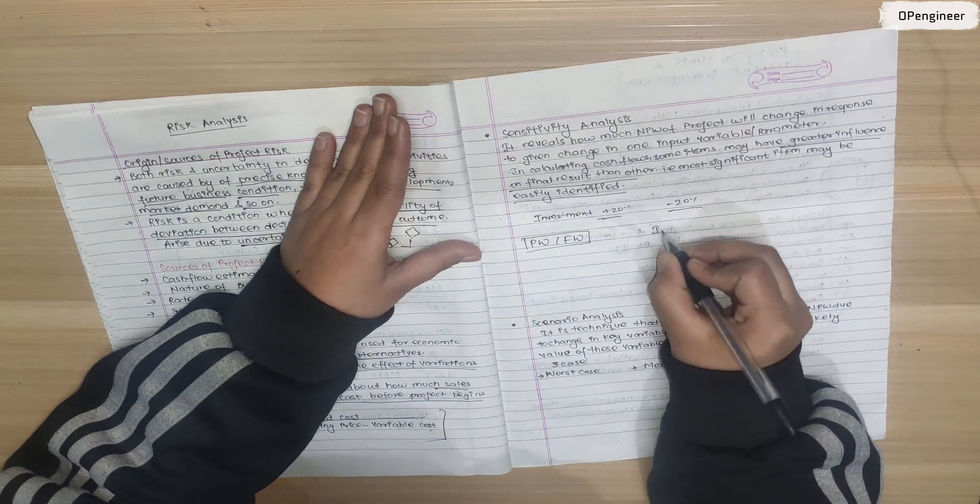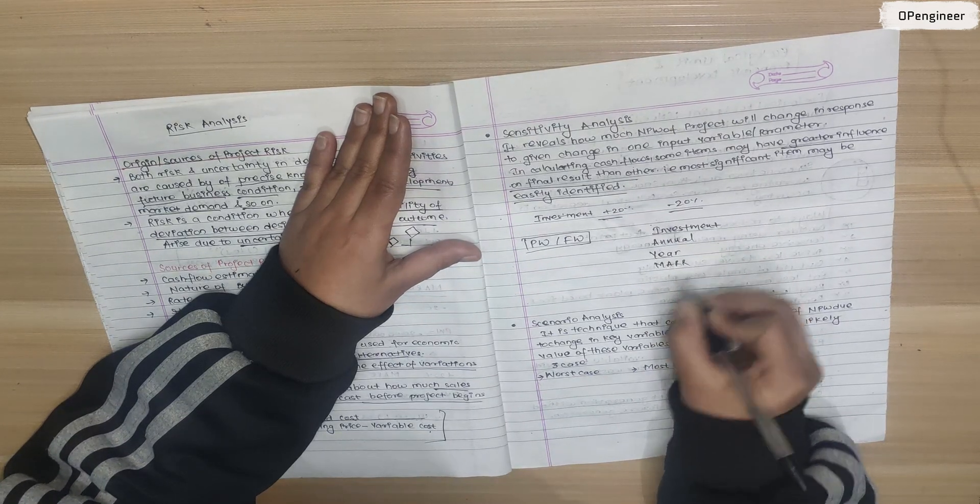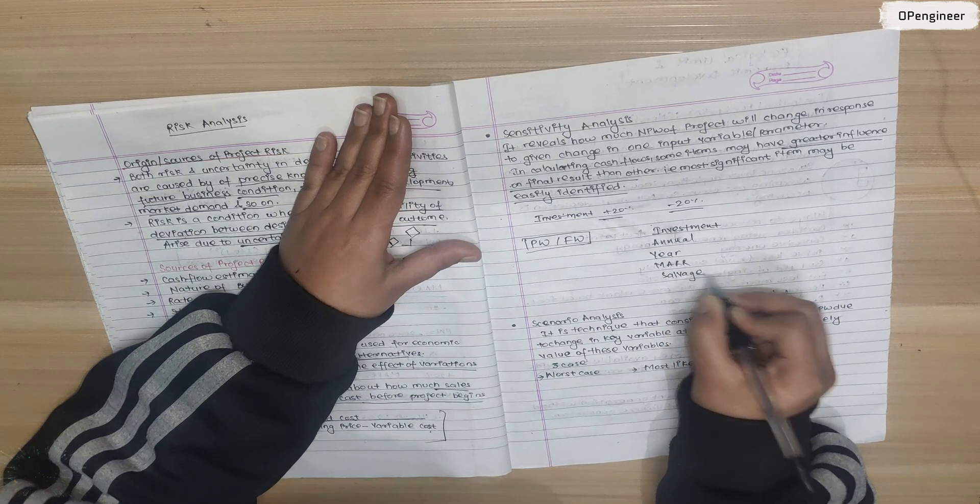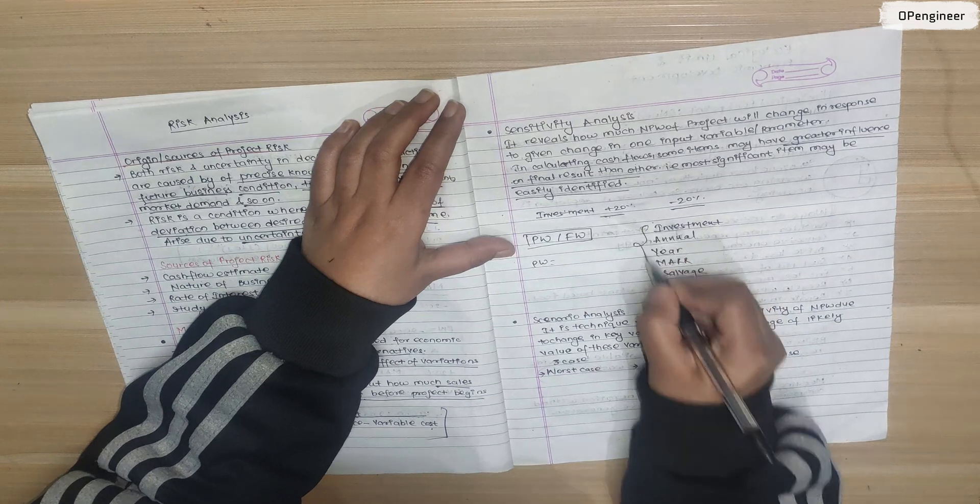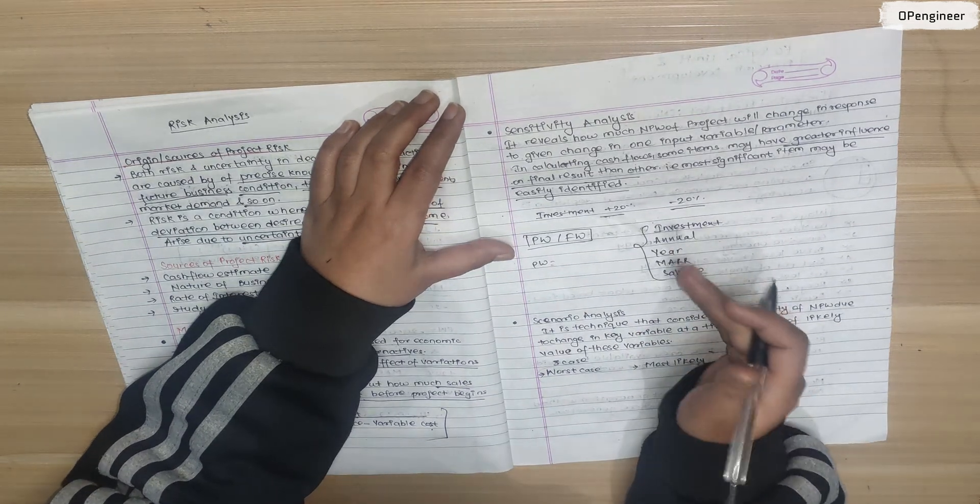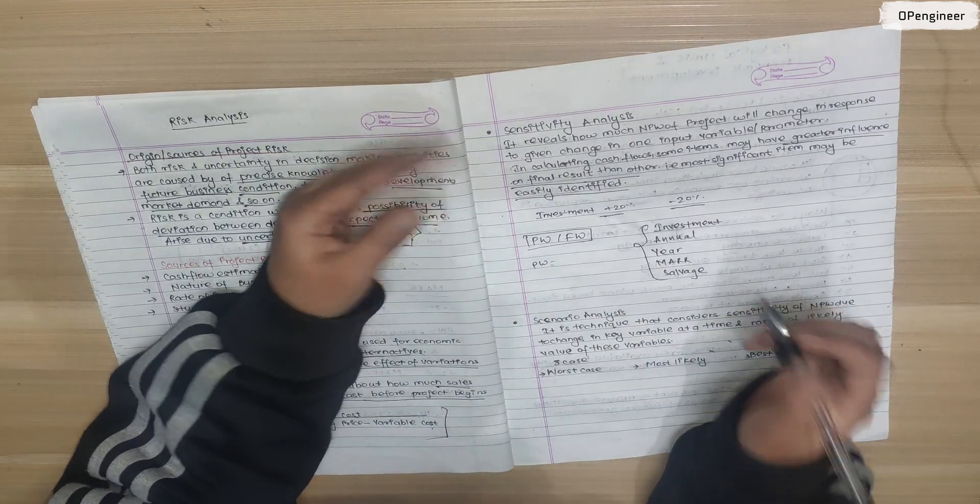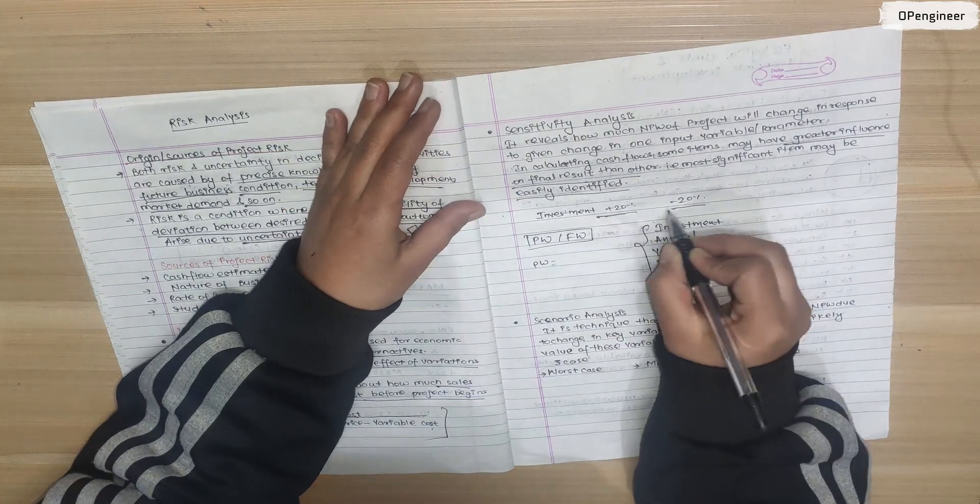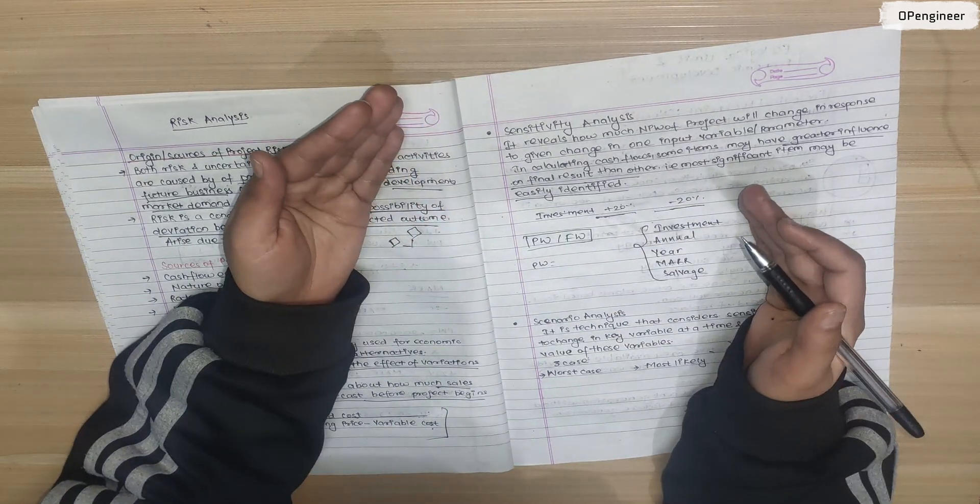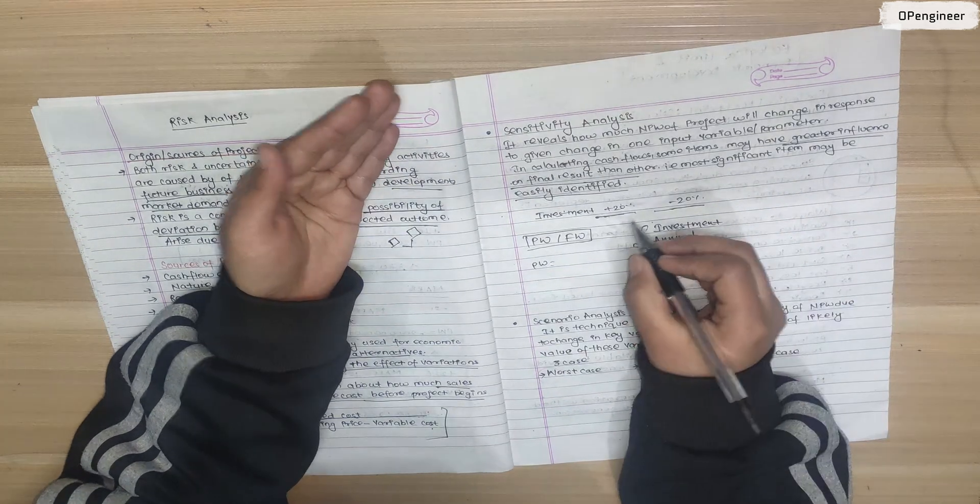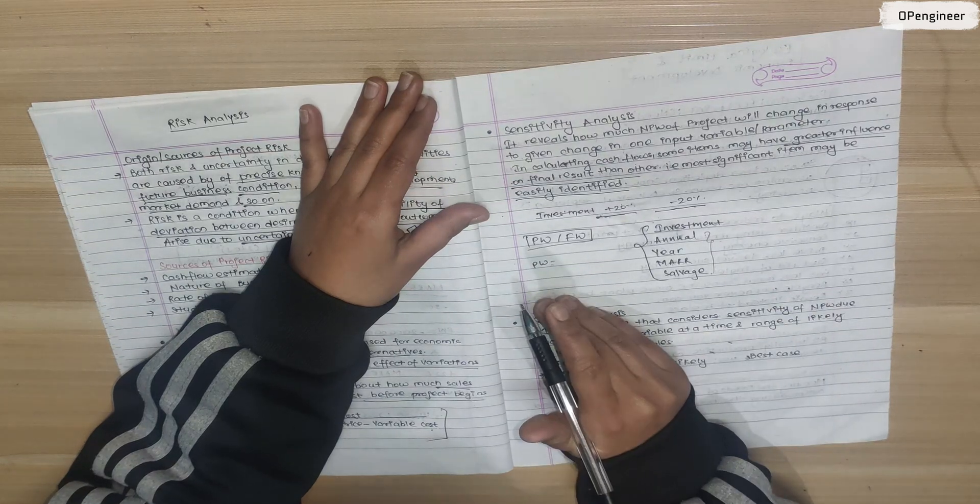When the question gives investment, annual amount, year, RR and salvage value - we calculate present worth for all these values without changing anything. Then if the question asks to change investment by plus 20% and minus 25%, how much change occurs in present worth - we change only investment, keep other data the same, and calculate present worth.